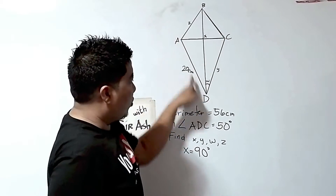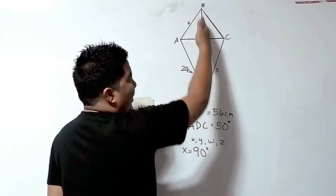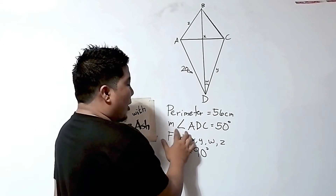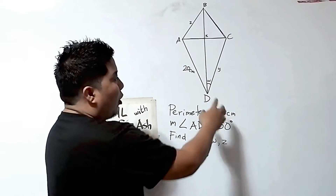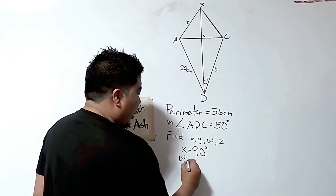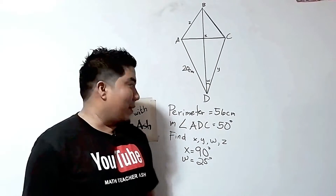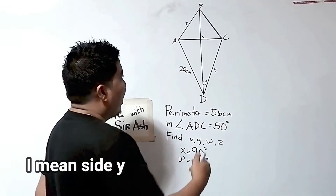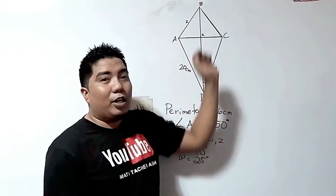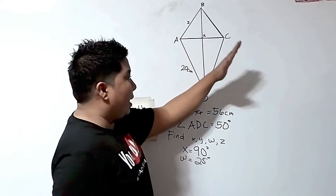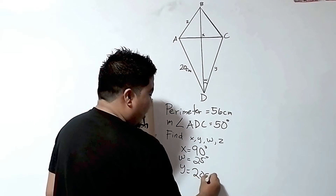If this is the angle that is not congruent to this angle, therefore this is being bisected by this diagonal as well as this angle is also bisected by this diagonal. The measurement of angle ADC is 50 degrees, and our unknown W is half of that — therefore W is equal to 25 degrees, because half of 50 is 25 degrees. Now for angle Y: remember that two pairs of consecutive sides in a kite are congruent. This side and this side are congruent, so Y is 20 centimeters.